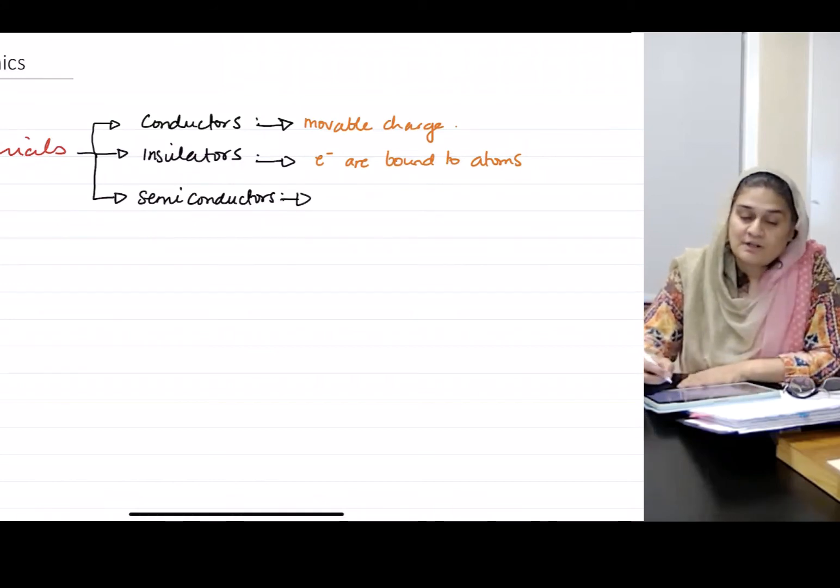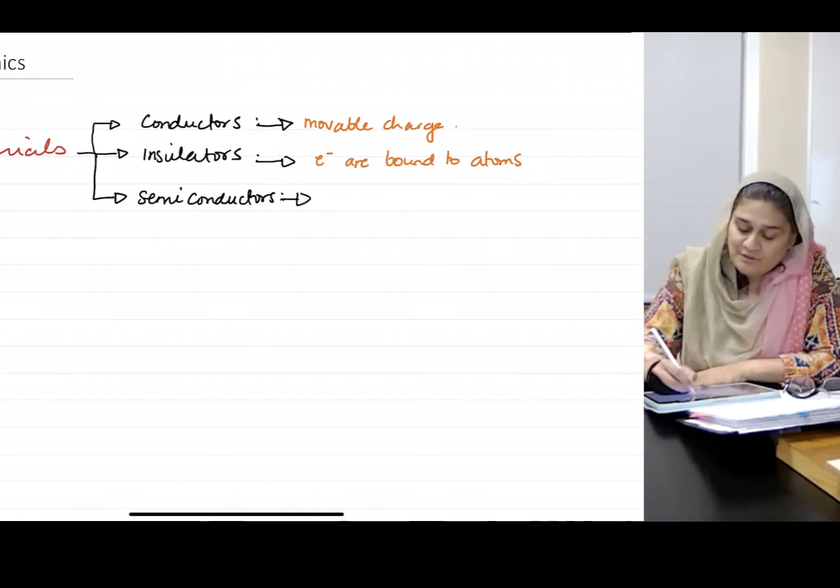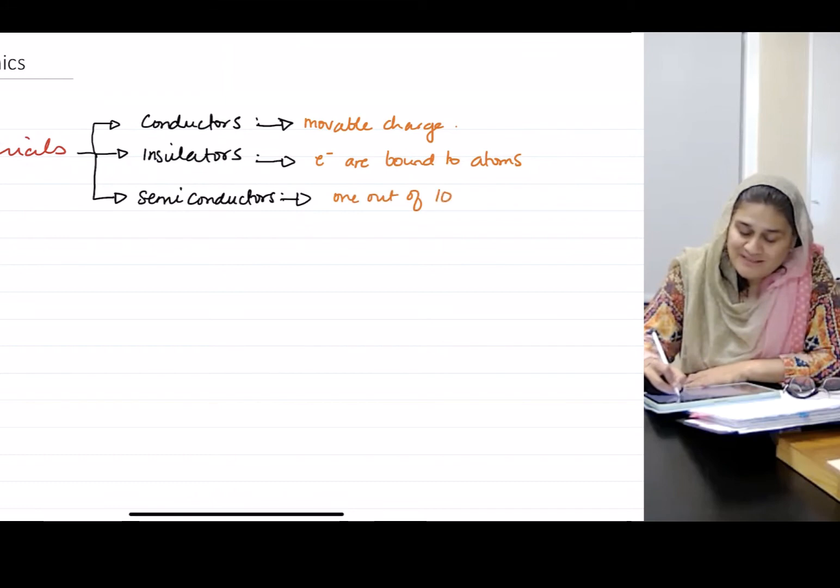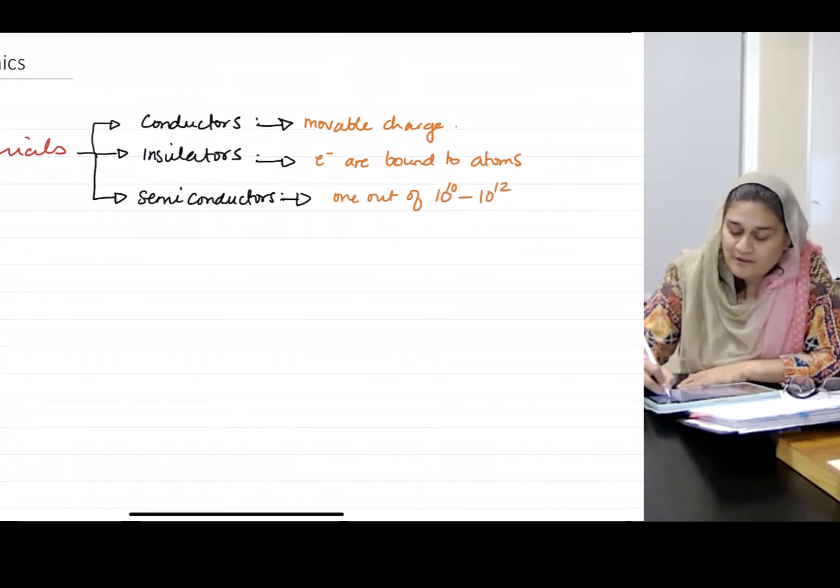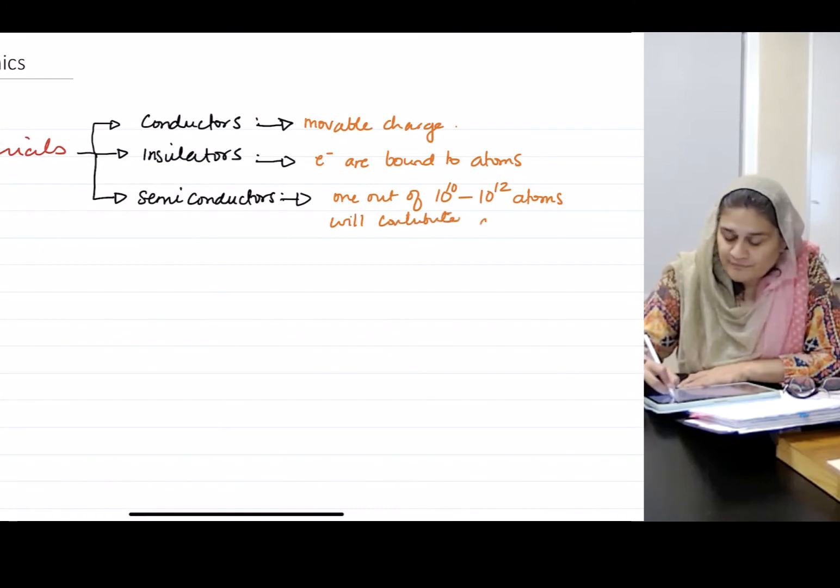Semiconductors are those materials in which one out of about 10^10 to 10^12 atoms will contribute an electron to the material for flow.